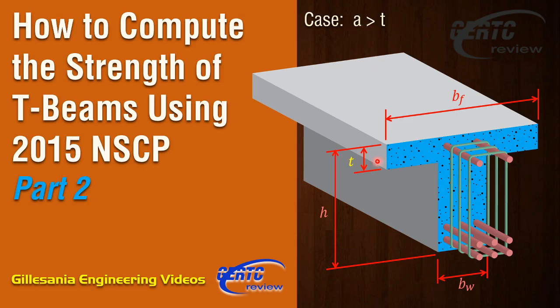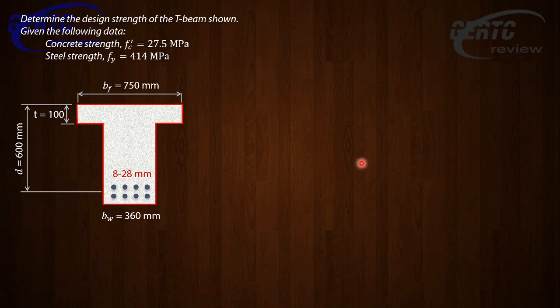Let's have this example problem. Determine the design strength of the T-beam shown. This is much narrower than what we have in our Part 1. Given: the effective width of the flange is 750 mm, the flange thickness or slab thickness is 100 mm, the effective depth to the tension bar is 600 mm, the width of the web is 360 mm, our fc prime is 27.5 MPa, our fy is 414 MPa, and the tension bars are eight 28 mm bars.